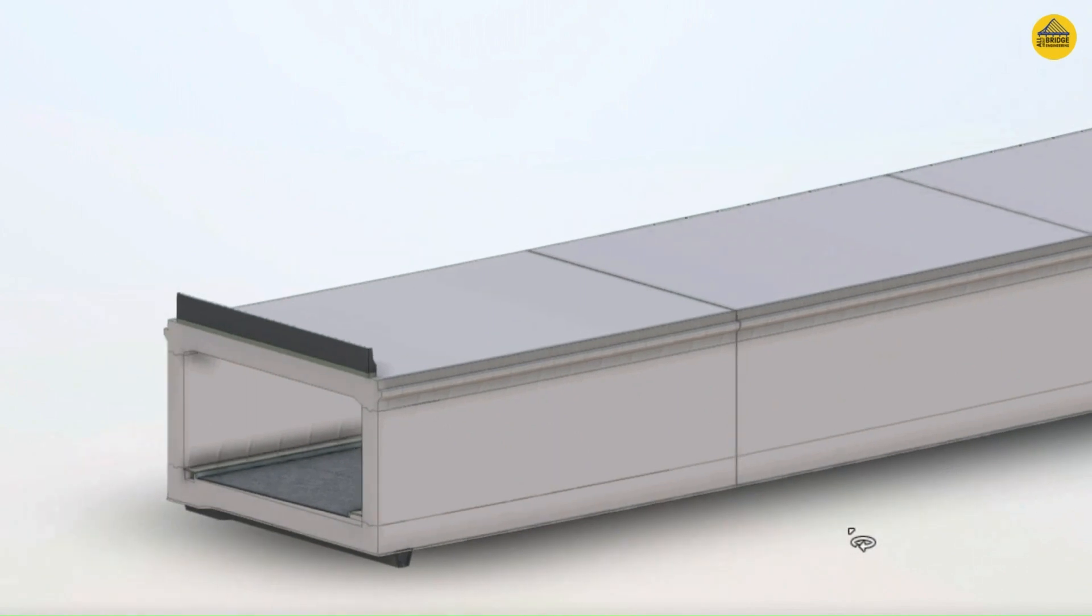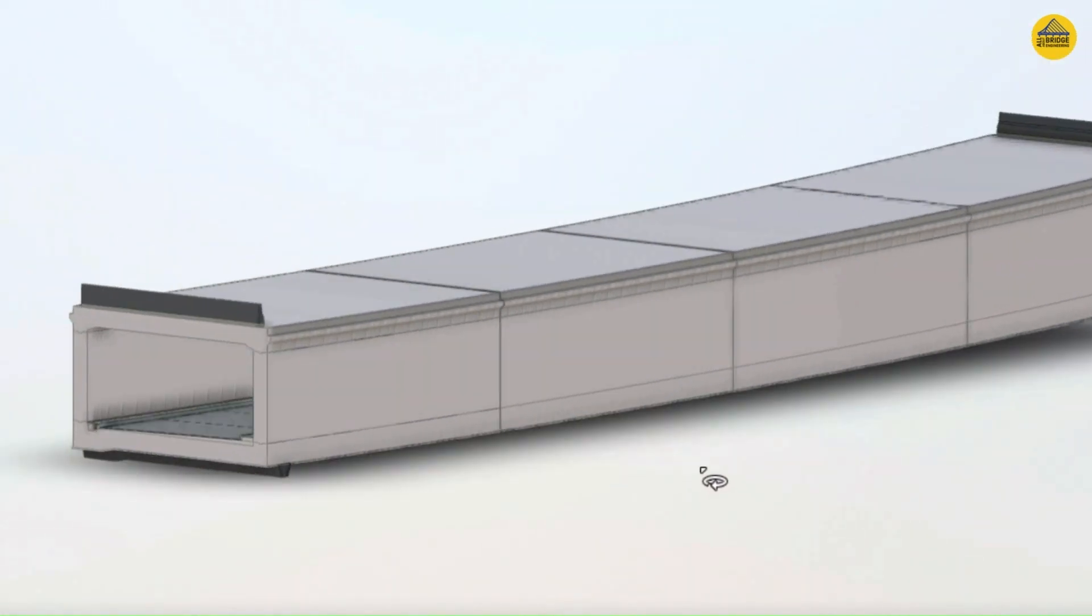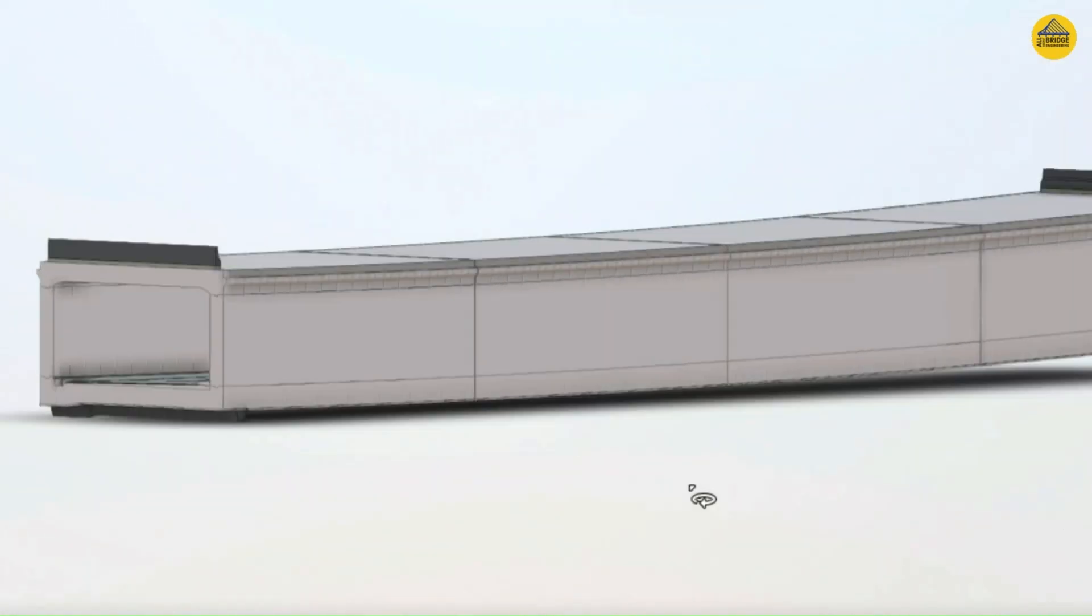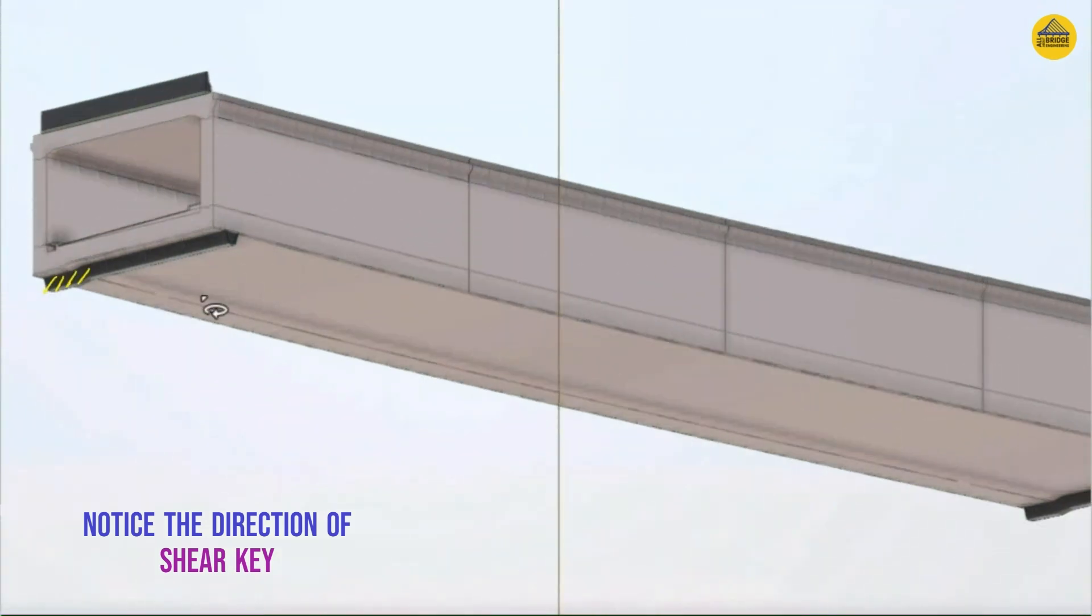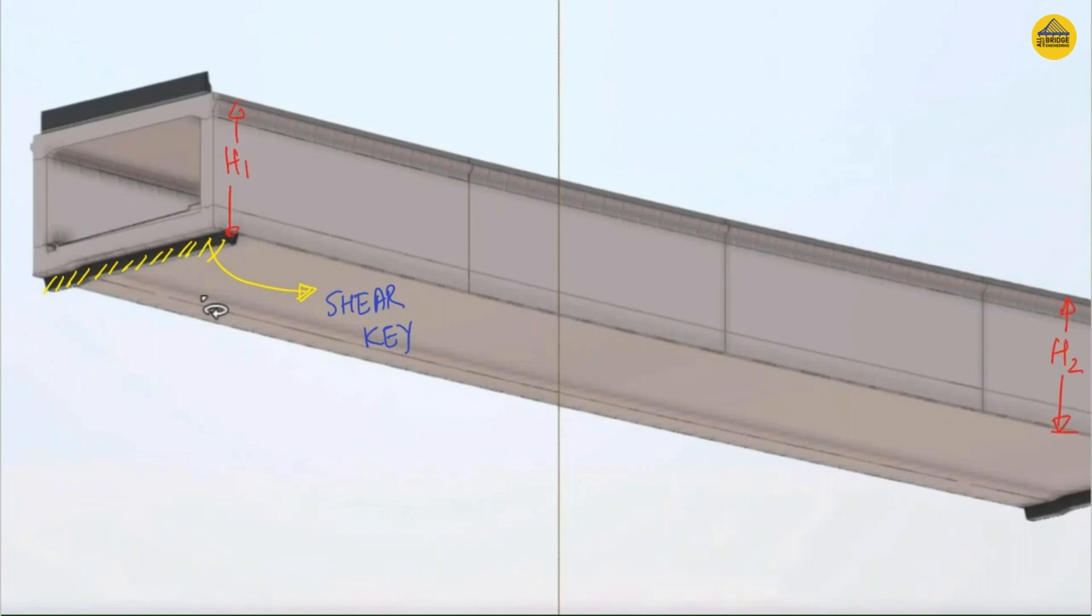There is another component which is attached to the bottom slab. Let's have a look at that from the bottom view. That component is known as the shear key. It's very important to note that shear key is present at both ends, at the entry as well as at the exit of the box. The shear key direction is always parallel to the slab, parallel to the span, and not along the barrel length.